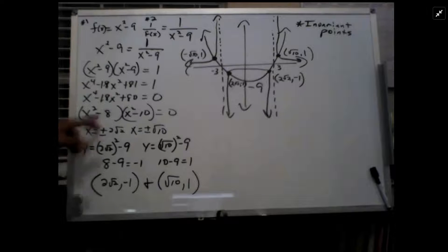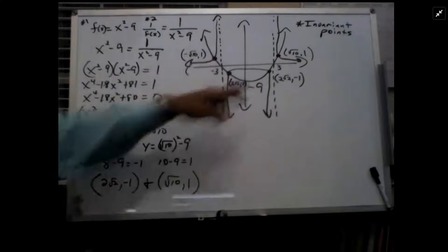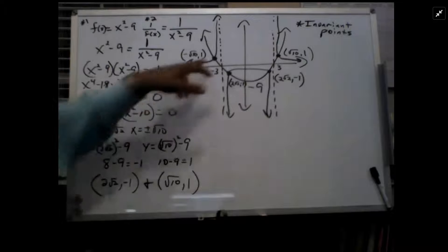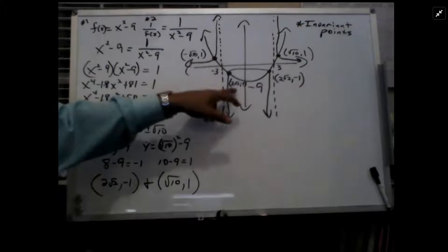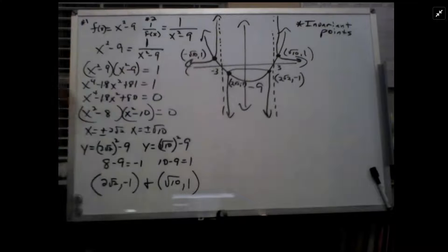So 2 radical 2 plus minus are my x numbers, and we'll show you this in a second, and plus minus the radical 10 are the x numbers for that point.